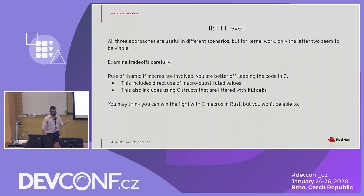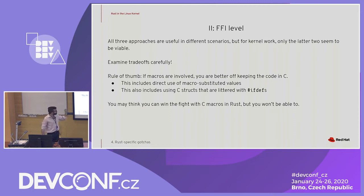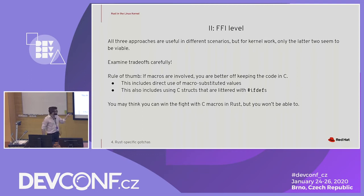Definitely examine the trade-offs carefully because all of these options have different places in different kinds of FFI. The rule of thumb I would say is if you're doing something with C preprocessor macros, or anything with structs that have ifdefs in them, you'll want to offload that to C — because you may want to try to win that war, but you will not.